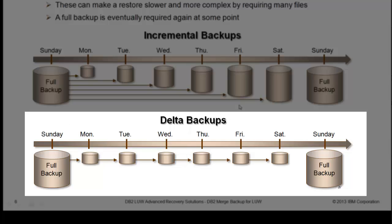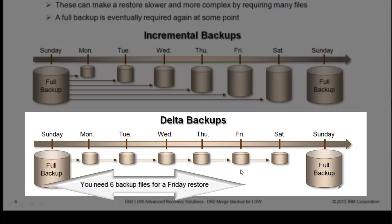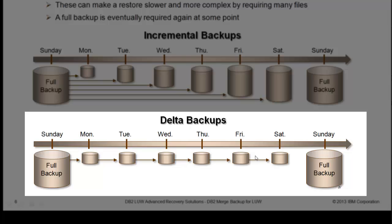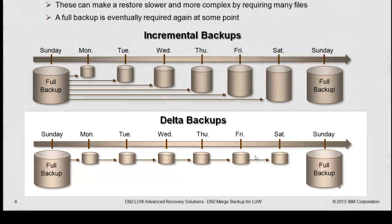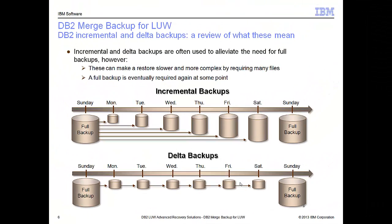So given the above scenario about Friday, you would need Friday, Thursday, Wednesday, Tuesday, Monday, and Sunday in order to get a restore point to Friday. Incremental and incremental delta backups are options that customers have for DB2 for different reasons. The incremental gives you a quicker restore since you only have two to deal with.